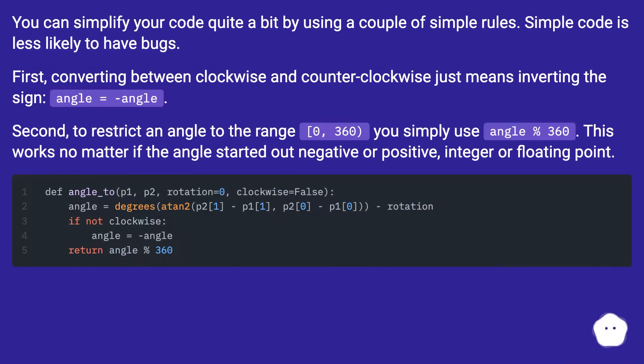You can simplify your code quite a bit by using a couple of simple rules. Simple code is less likely to have bugs. First, converting between clockwise and counterclockwise just means inverting the sign: angle = -angle. Second, to restrict an angle to the range [0, 360), you simply use angle % 360. This works no matter if the angle started out negative or positive, integer or floating point.